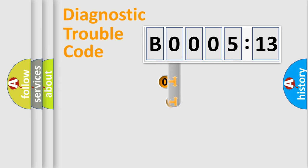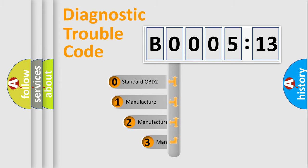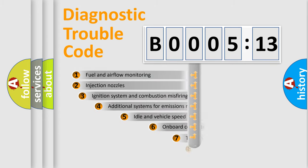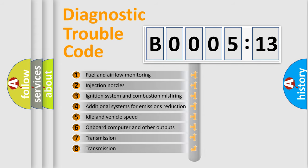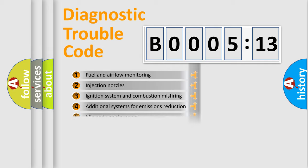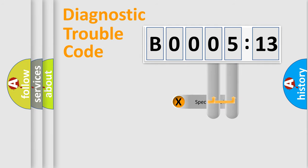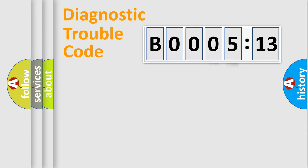This distribution is defined in the first character of the code. If the second character is expressed as zero, it is a standardized error. In the case of numbers 1, 2, or 3, it is a manufacturer-specific error expression. The third character specifies a subset of errors. This distribution is valid only for the standardized DTC code, and only the last two characters define the specific fault of the group.